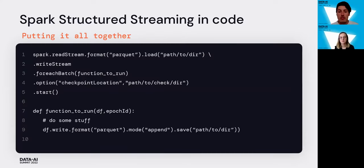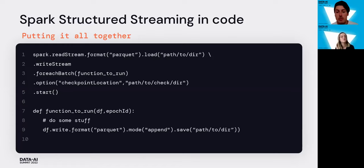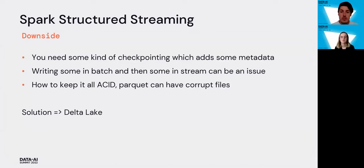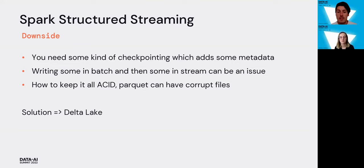Looking at how this looks in code, you can see the forEachBatch running a function defined elsewhere in the notebook, and that function does the actual save to a table in append mode. The checkpoint location is just a path to a different directory. The downside of Spark Structured Streaming is that it needs checkpointing which adds metadata, and switching between batch and streaming is tricky, and Parquet files can have corruption issues.